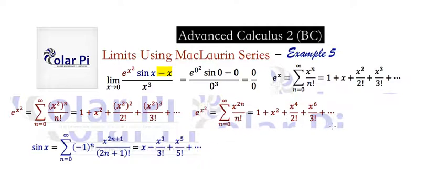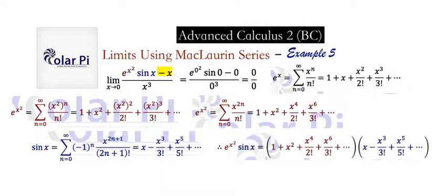We multiply two infinite polynomials to get the Maclaurin series for e to the x squared times sine x. By the way, when you make new Maclaurin series out of old ones, that's called modifying Maclaurin series. I'm going to make at least five videos on how to modify Maclaurin series to get new ones from old ones — meaning the five important ones I already mentioned.